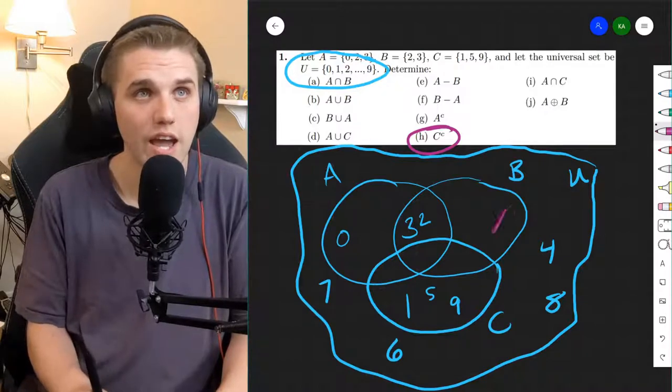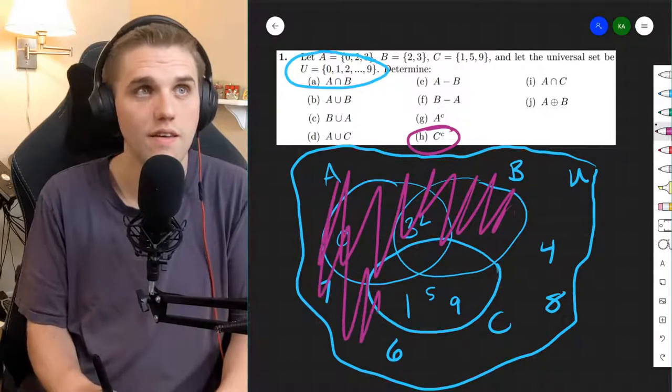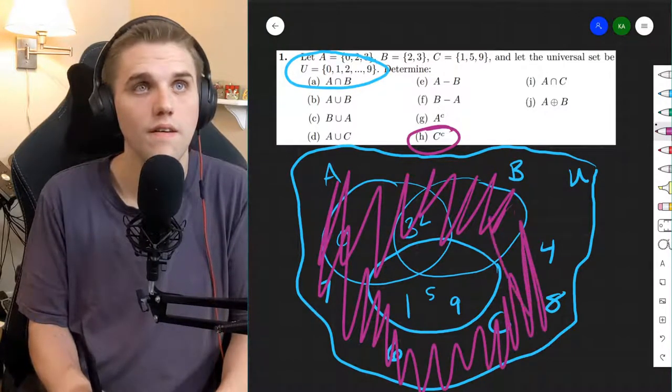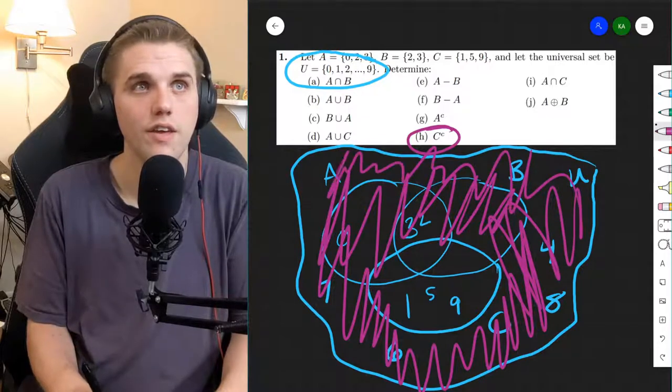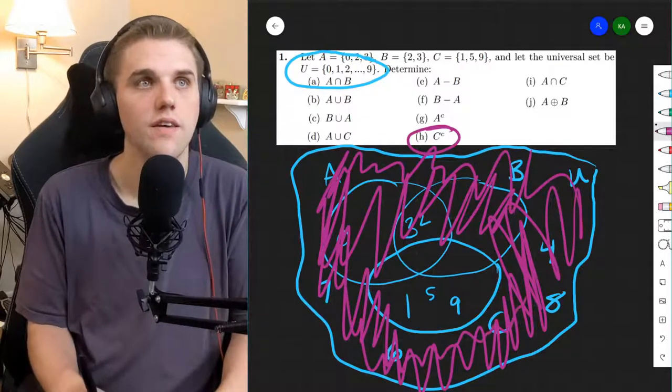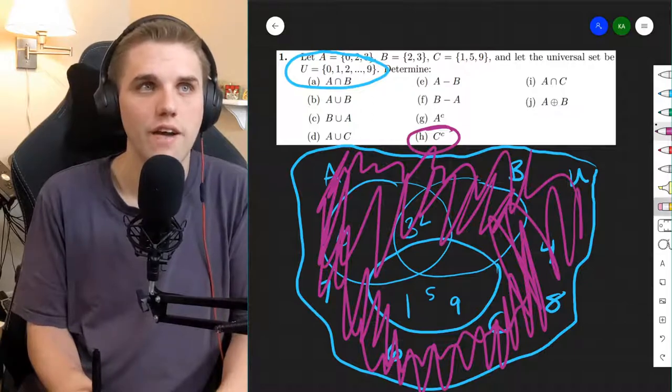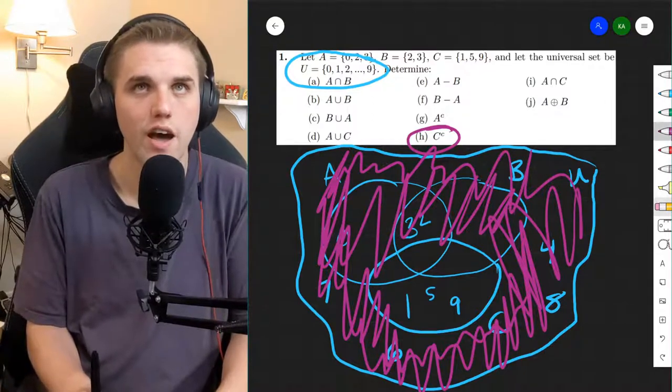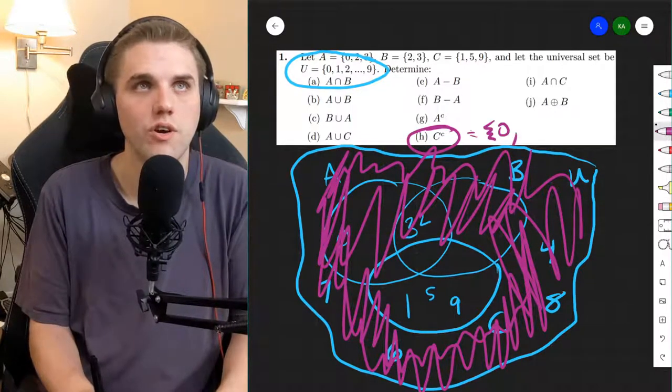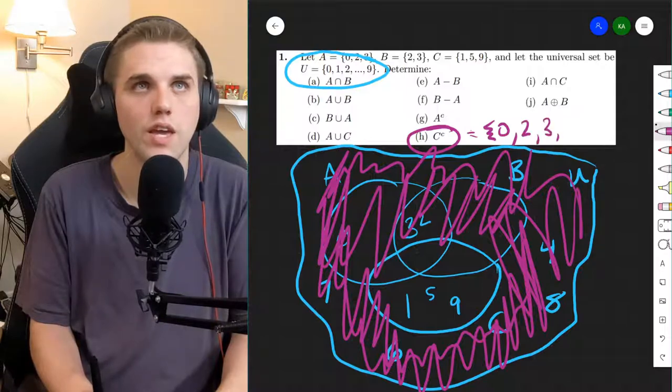All right, C complement. So we take everything outside of C. Everything but C. So that is everything but 1, 5, and 9. So 0, 2, 3, 4, 6, 7, and 8.